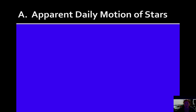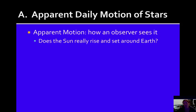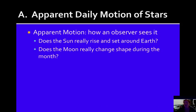When we talk about apparent daily motion of the stars, this is what we see from Earth, how stars move through the sky. Is the sun really rising and setting around the Earth? Is the moon really changing shape during the month? Apparent motion discusses what we see as observers from the Earth. What is really happening? The sun isn't rising and setting—it's the Earth that's actually moving. We see the sun moving, but it's really just the Earth's motions that cause the sun to have apparent motions.